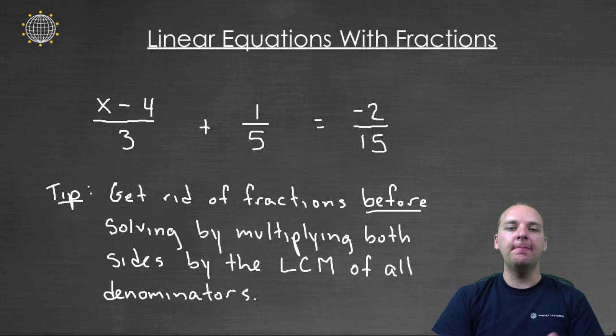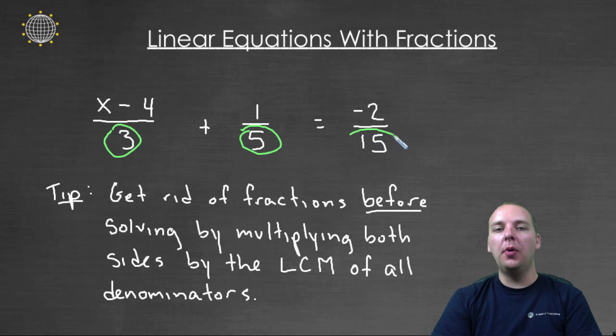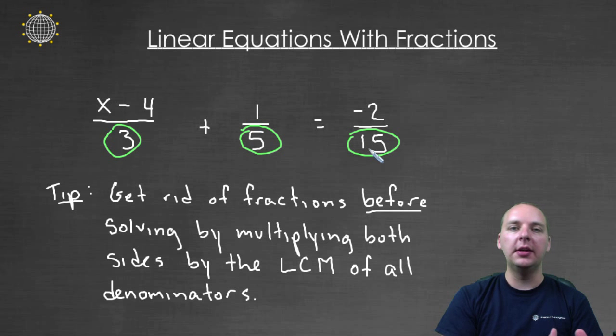The way you do that is you'll first find the least common multiple of all the denominators that you have, and then you'll multiply that least common multiple to the left side of the equation and the right side of the equation. What that'll do is it'll get rid of all the fractions. It'll give you a new equation that's equivalent to the old one, but the new one won't have fractions in it.